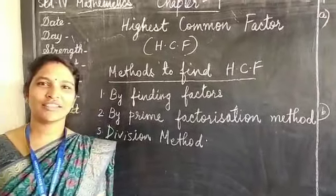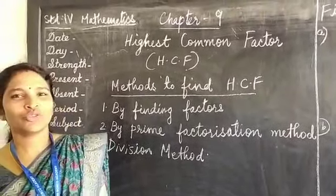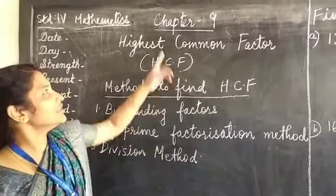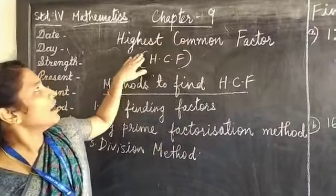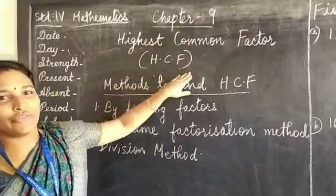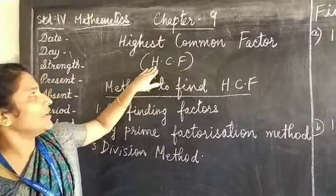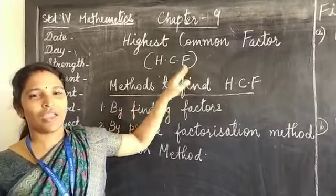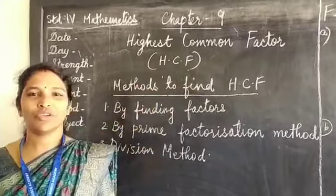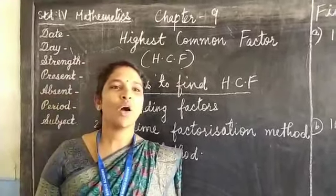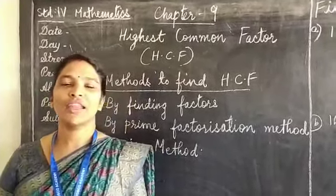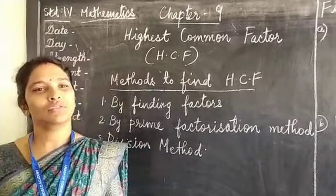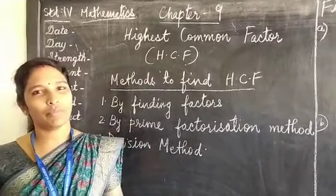Hello students, we are going to start our new chapter, Chapter 9 - HCF, Highest Common Factor. In this chapter, we are going to learn how to find the HCF of 2 or 3 numbers.